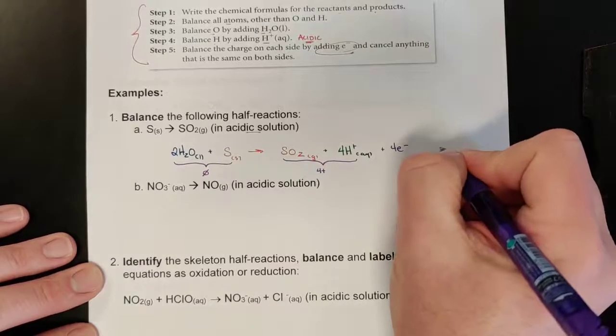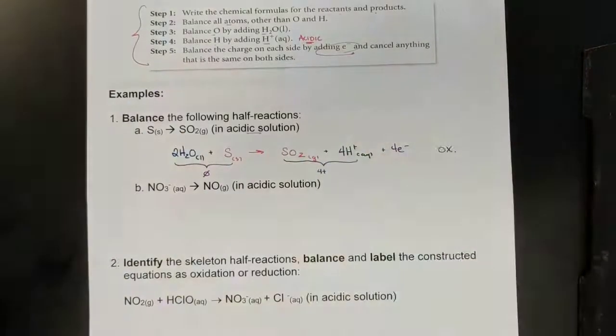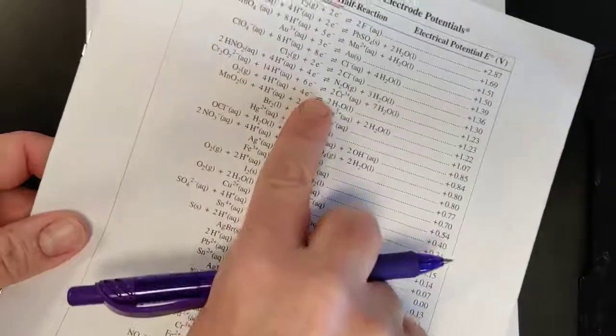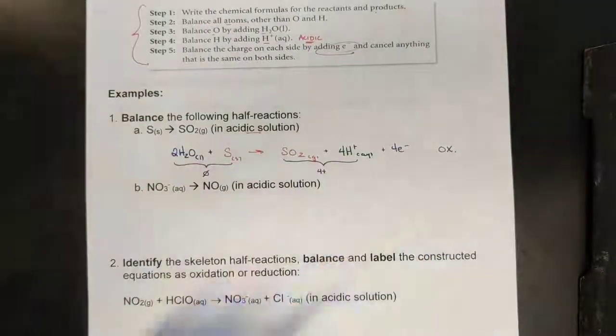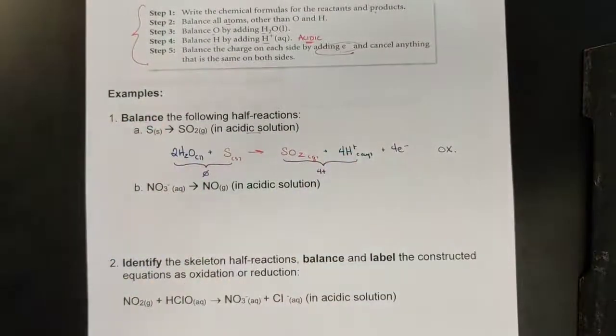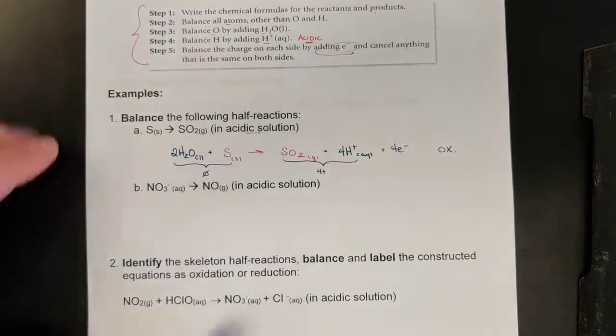And so, we can see that we get our half reaction, in particular, an oxidation half reaction. We didn't have sulfur-to-sulfur dioxide anywhere on here. So, we made our own, and knowing it's an acidic solution, we have the water and the hydrogens available to add back and forth to this various equation. First example, hopefully it's a little bit clearer.